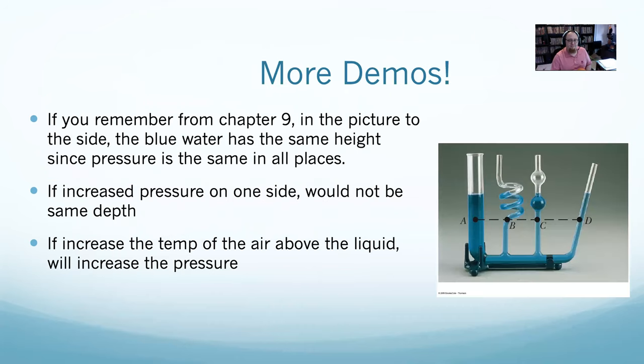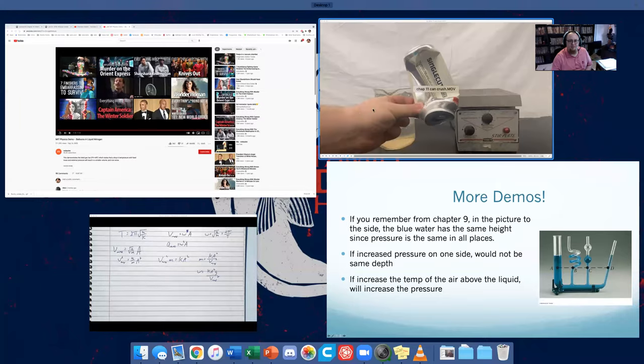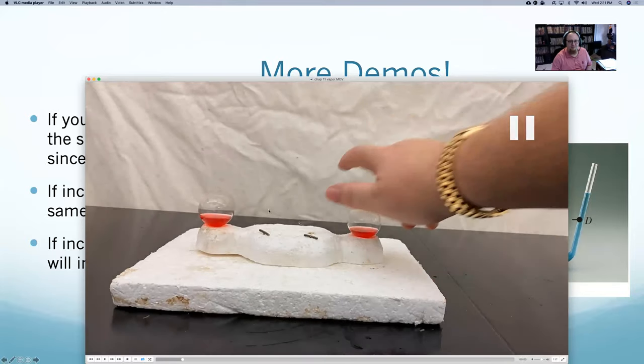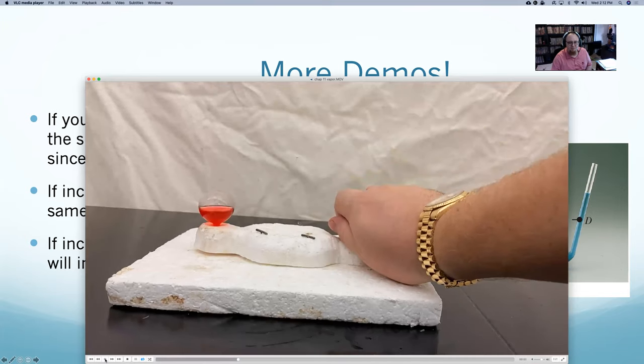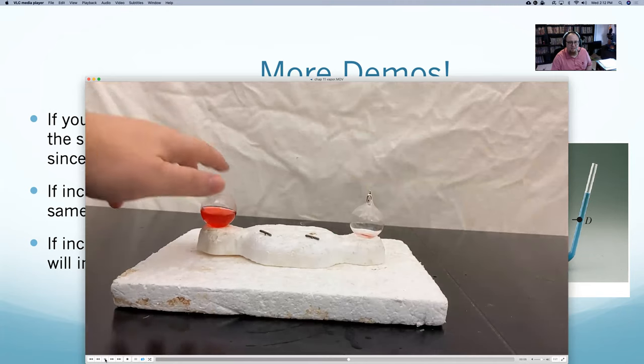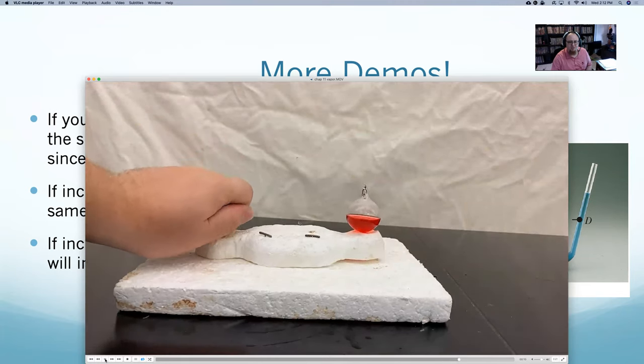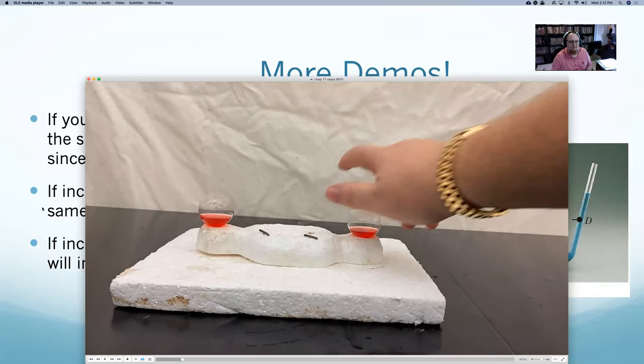To give you another demo of this, if you remember from chapter 9, we said the height of the liquid is the same at all. This video is a liquid that's very sensitive to pressure. This is solid glass, I'm not squeezing anything. I'm going to grab onto this side. By grabbing onto the right side, I'm going to increase the temperature of this bulb. When I increase the temperature, that will increase the pressure. By increasing the temperature, I can make all the liquid go to the other side.